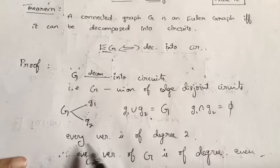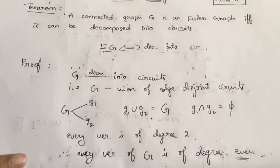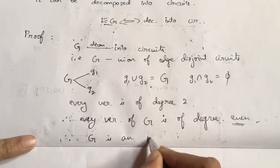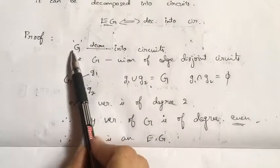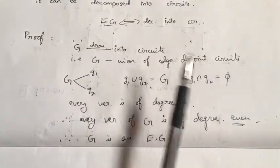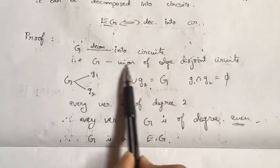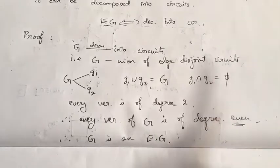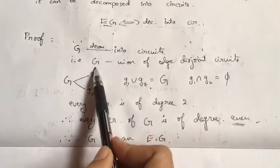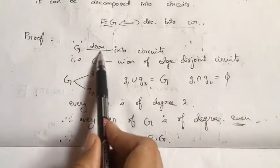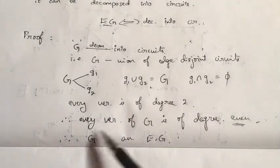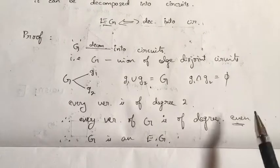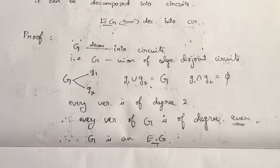When every vertex in a graph is of even degree, that graph has to be an Euler graph. So G is an Euler graph. If G can be decomposed into circuits, then by definition G is the union of edge disjoint circuits. In each circuit every vertex is of degree 2, so in the union every vertex in G is of even degree, and therefore G is an Euler graph.